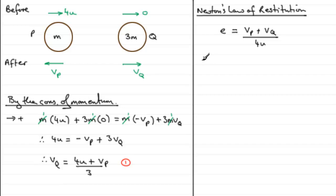Now if we multiply both sides by 4u and make VP the subject, then we'd have that VP would equal 4u E minus VQ. Now we know what VQ is from 1 here. So we can substitute 1 into this equation. So if we do that, we've got VP equals 4u E minus, and that's going to be 4u plus VP over 3. Let's just put here from 1.